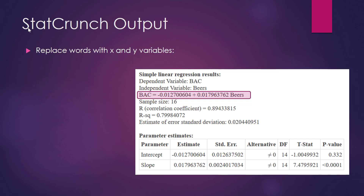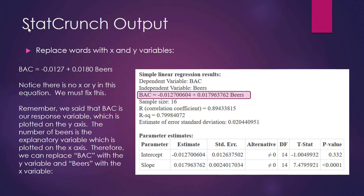The next thing we need to do is replace the words BAC and beers with X or Y. Remember, BAC, or blood alcohol content, is our response variable, which is plotted on the Y axis. The number of beers is the explanatory variable, or predictor variable, and is plotted on the X axis. Therefore, we can replace BAC with Y and beers with X. When we do this, we get: Y equals negative 0.0127 plus 0.0180X. That is the form of the equation I'm looking for on a test or homework assignment.